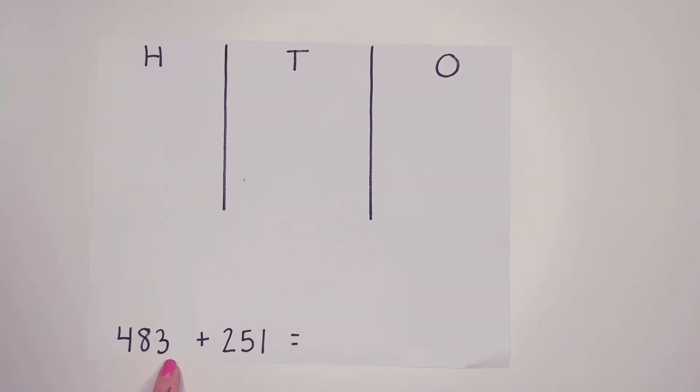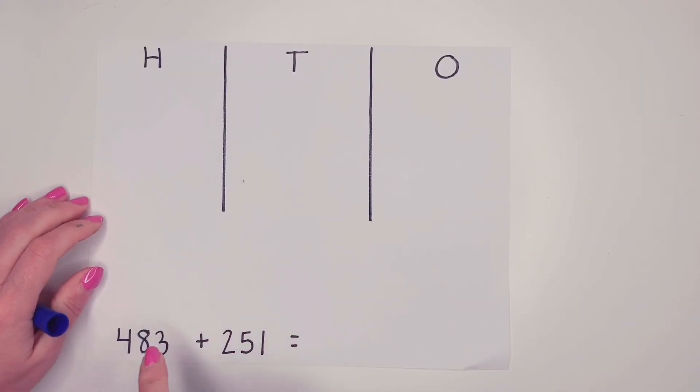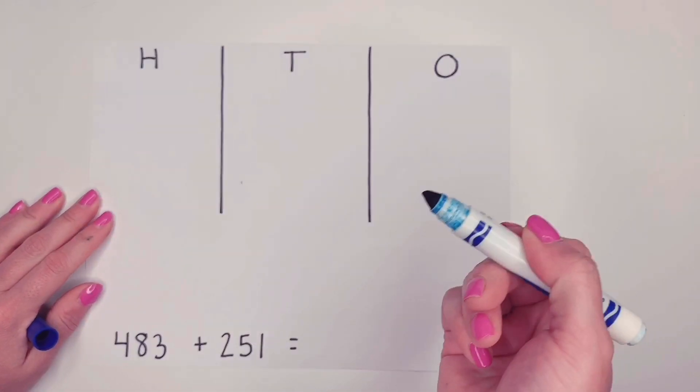So here I have 483 plus 251. So I need to represent these numbers in our chart, showing hundreds, tens, and ones. So I like to use my colors. So I'm going to show 483 using blue.